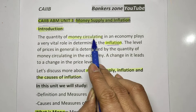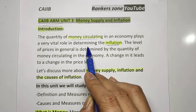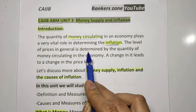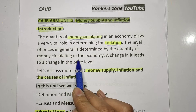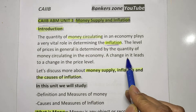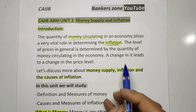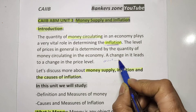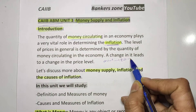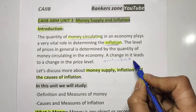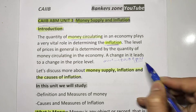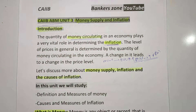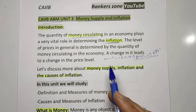The total money in the economy determines the inflation. The level of prices in general is determined by the quantity of money circulating in the economy — a change in it leads to a change in price level. If there is more money supply in the economy or market, that will lead to an increase in prices, which will lead to an increase in inflation.